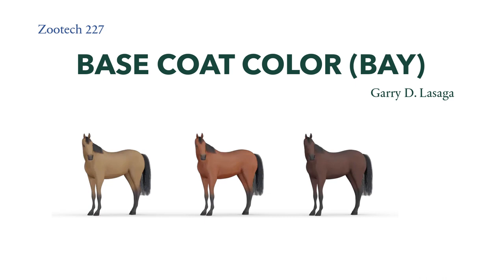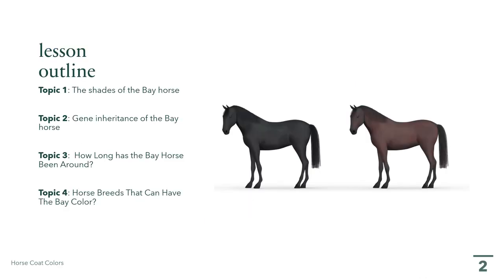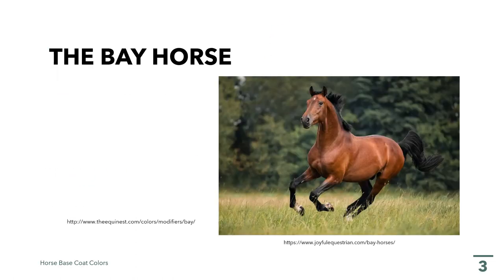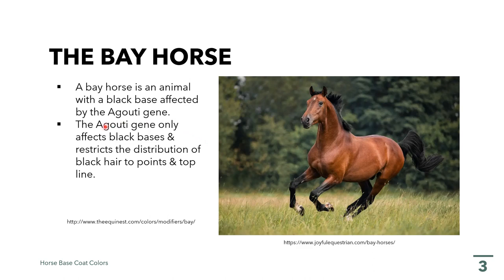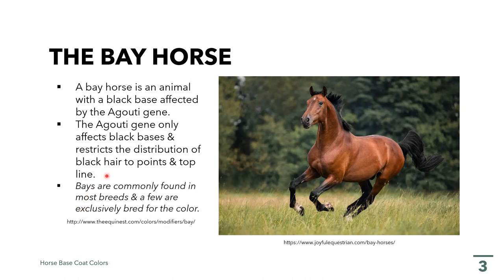In this presentation, we'll talk about the bay color as the base coat color of horses. We're going to talk about the shades of the bay horse, the gene inheritance of the bay horse, how long the bay horse has been around, and the different horse breeds having the bay color. A bay horse is an animal with a black base affected by the agouti gene, which restricts the distribution of black hair to the points and topline. Bays are commonly found in most breeds and few are exclusively bred for the color.